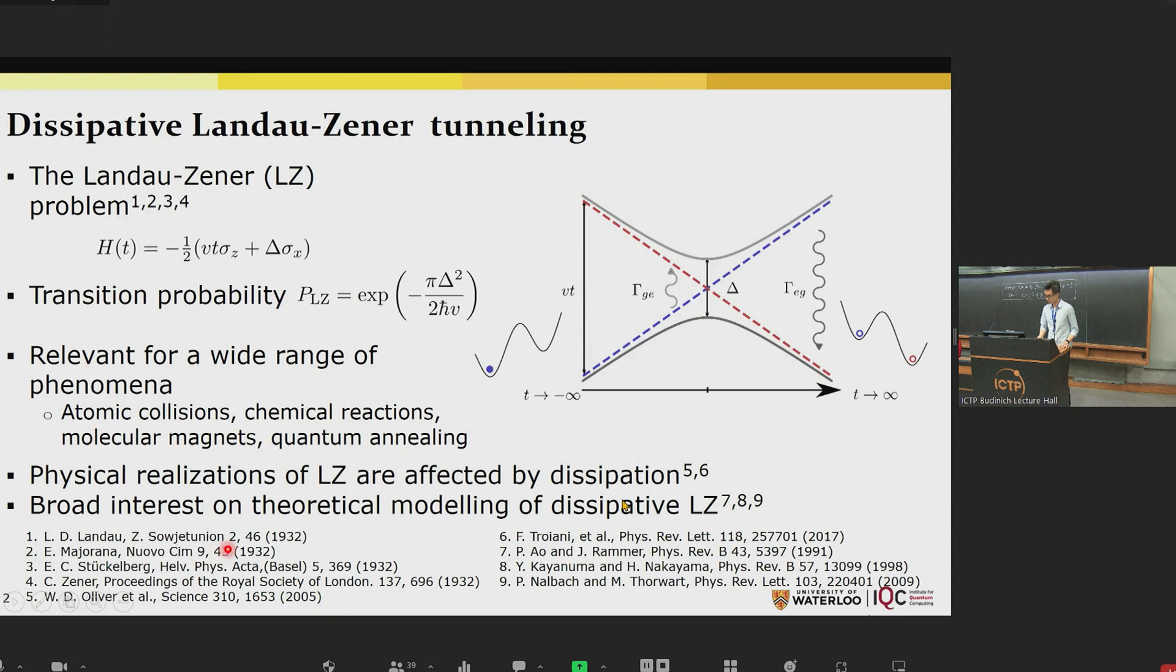This problem has a simple solution in the coherent limit. The transition probability is given by this exponential of this factor of delta squared over v, where delta is the minimum gap or the tunneling amplitude and v is the sweep rate.